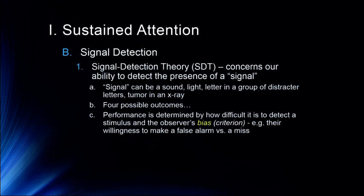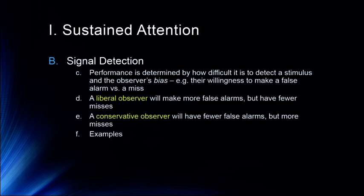Another important aspect of signal detection theory is what we call the observer's bias or criterion — their willingness to make a false alarm versus a miss. Our criterion may be adjusted based on circumstances. A liberal observer makes more false alarms but has fewer misses — probably someone expecting an important call who's really focused on hearing the phone and may trick themselves into thinking it's ringing. A conservative observer makes fewer false alarms but is more likely to miss the phone — perhaps they're not expecting a call or are really in a hurry.